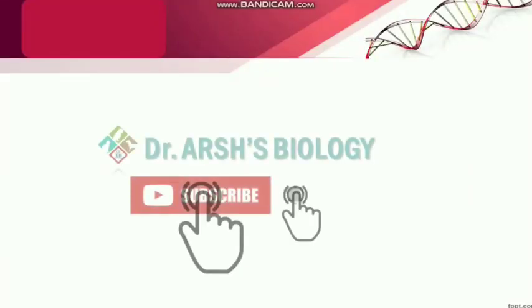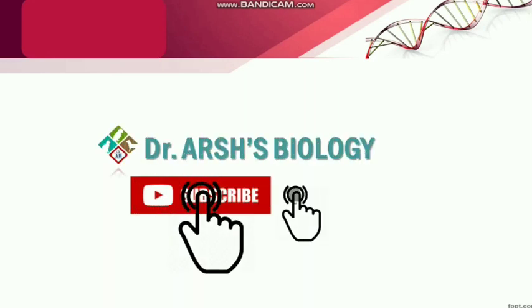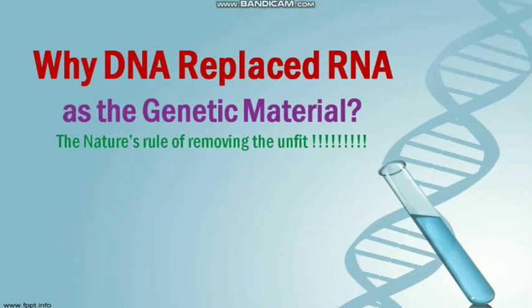Welcome to this new lesson from Dr. R's Biology. In this lesson we are going to discuss why DNA replaced RNA as a genetic material. We know that at the initial stage of evolution, RNA was the genetic material of living organisms, but later DNA replaced RNA. It's a natural rule of removing the unfit.